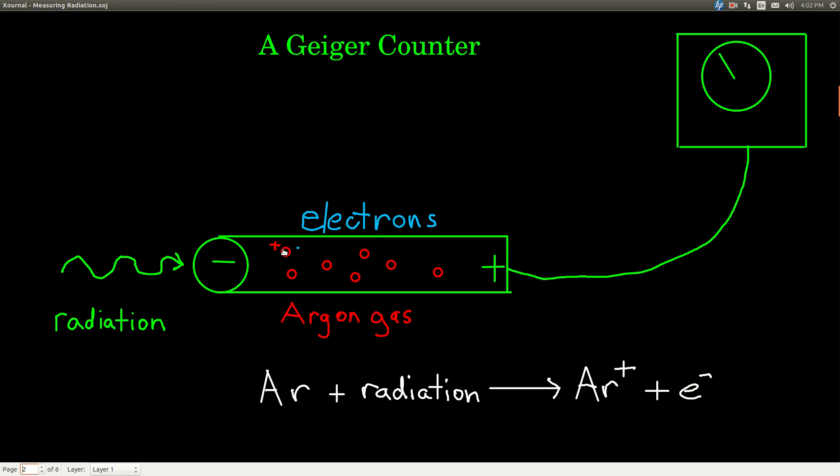it ionizes it, that means it knocks an electron off, and that creates a positively charged atom, like an argon with a plus charge, and an electron. Now in this tube there's a positive end and a negative end, and anything with a negative charge would be pulled towards the positive end, and anything with a positive towards the negative end.